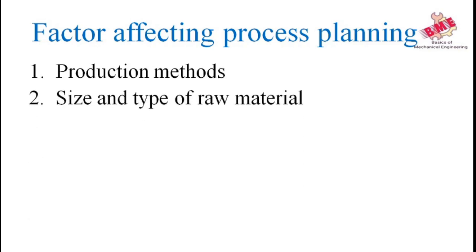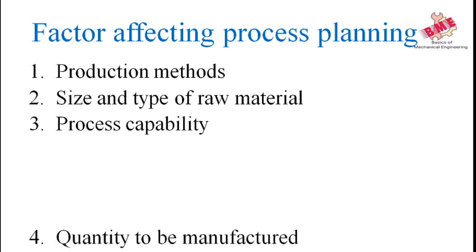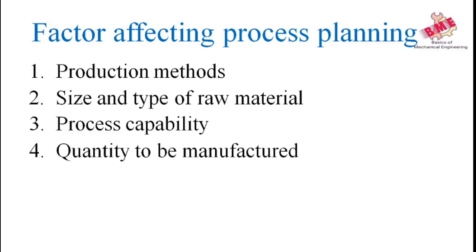The second factor is size and type of raw material — the size and type of material determines which basic methods of manufacturing should be used. For example, a component like an engine is made by casting or forging. The third factor is process capability, which tells about the natural tolerance of the machine. Process engineers must know what types of machines are available in the industry. If the product changes and we don't have the required equipment, we need to purchase it.